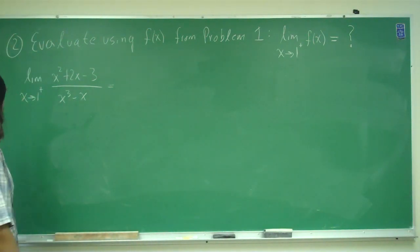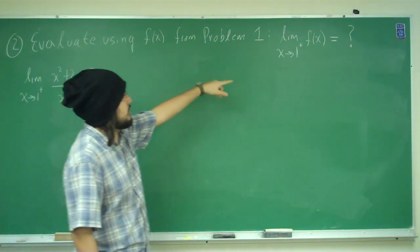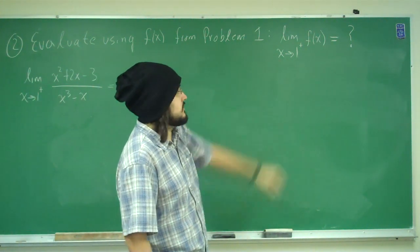Alright, so now we're doing problem 2. Problem 2 says, evaluate using f of x from problem 1, the limit as x approaches 1 from the right of f of x.